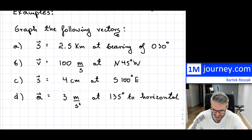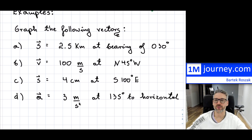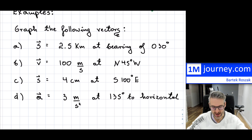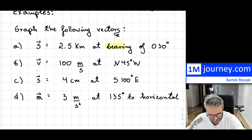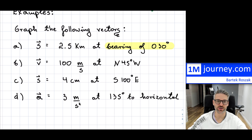I want to be able to graph these vectors, so I'm going to do it one by one. The first thing I want to point out is: let's take a look and see which ones are true bearing, which ones are quadrant bearing, and which ones are a reference to a horizontal. So right here, this is a bearing of 030 degrees — this would be a true bearing type of way of describing a direction.